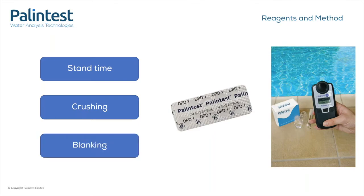A final thing that we need to consider when doing a test is the blank. The blank needs to be your sample without any reagents added, in a clean test tube. This is used to tell the instrument what the sample looked like before you added the reagents, so it knows how much adding the reagents has changed the percent T value and what effect that colour change has had. It's important to do the blank with each sample you do to get the best results.